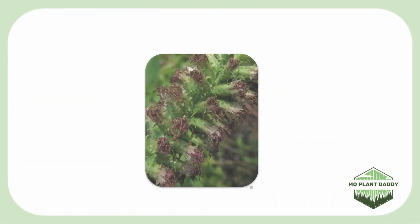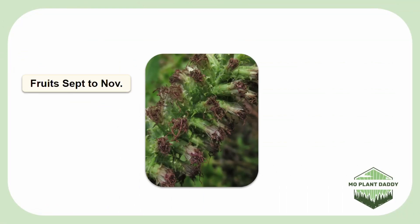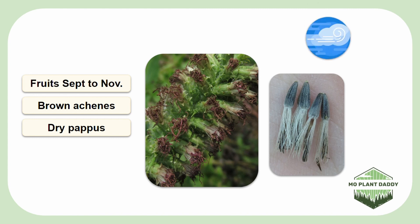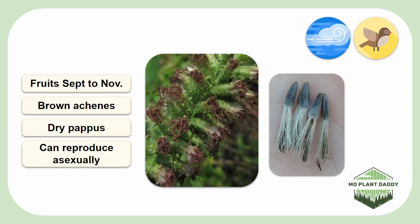After pollination takes place, in about September to November, brown achenes with a dry pappus form. These seeds are dispersed by the wind. However, gay feather has a thick corm which supports its very fibrous root system and allows it to occasionally reproduce asexually. Lastly, birds will eat the seeds produced by this species.